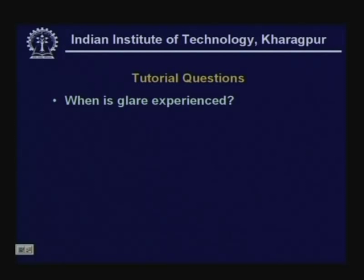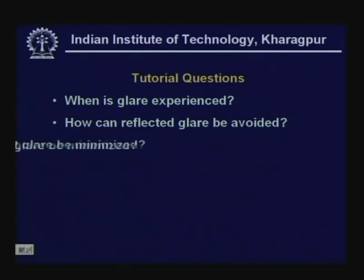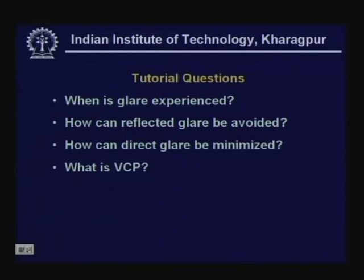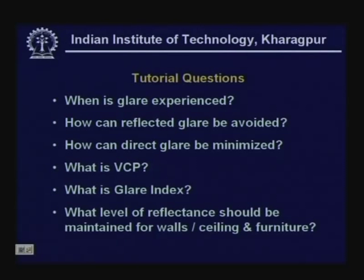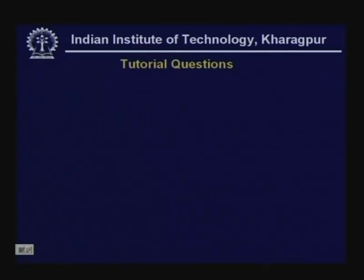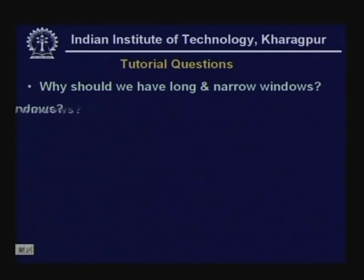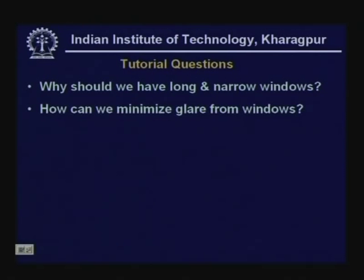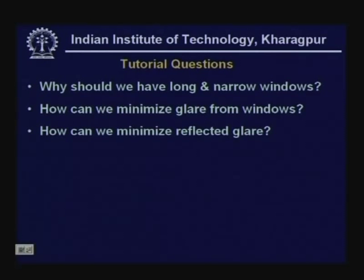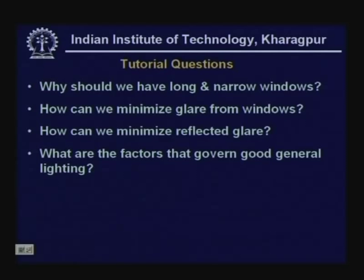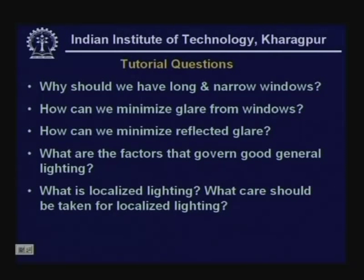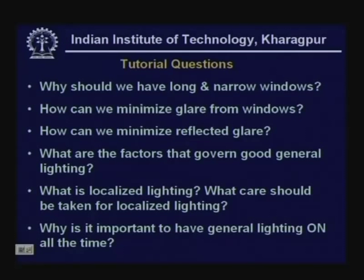Questions that can be addressed: When is glare experienced? How can reflected glare be avoided? How can direct glare be minimized? What is VCP? What is glare index? What level of reflectance should be maintained for walls, ceiling, and furniture? Why should we have long and narrow windows? How can we minimize glare from windows? How can we minimize reflected glare? What are the factors that govern good general lighting? What is localized lighting and what care should be taken for it? Why is it important to have general lighting on all the time?